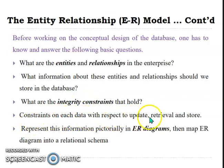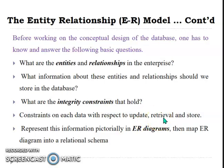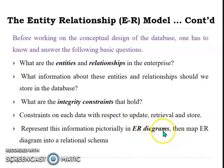The third question concerns each piece of data with respect to updating, retrieving, and storing. After identifying entities and relationships, you must consider what kinds of constraints to apply when updating data, what searching techniques to use to retrieve data, and what algorithms to use to store data. The last question is: how do you represent the information — in which way can you draw the ER diagram after identifying relationships, necessary information, and integrity constraints?